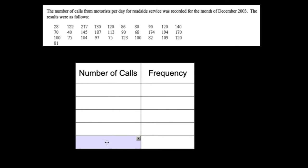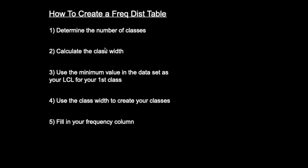Because I have five rows here, let's say we want five classes. The first step is to determine the number of classes. If you're making your own frequency table, you can do whatever you want, but for this class I'm going to give you the number of classes so that everybody has the same frequency table. Yellow is for this example, white is in general.